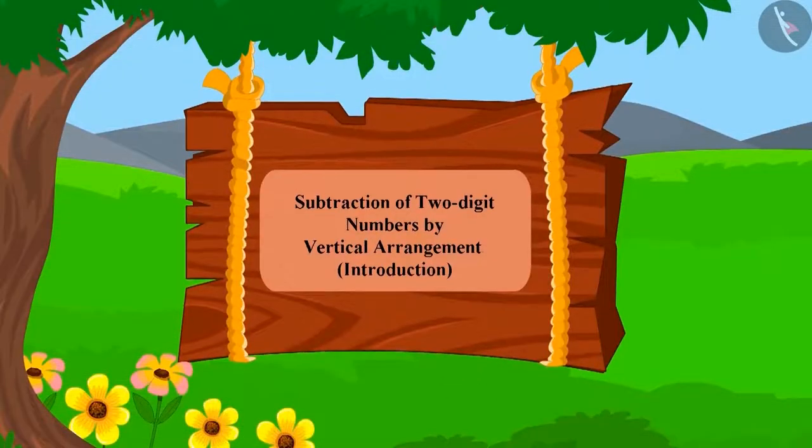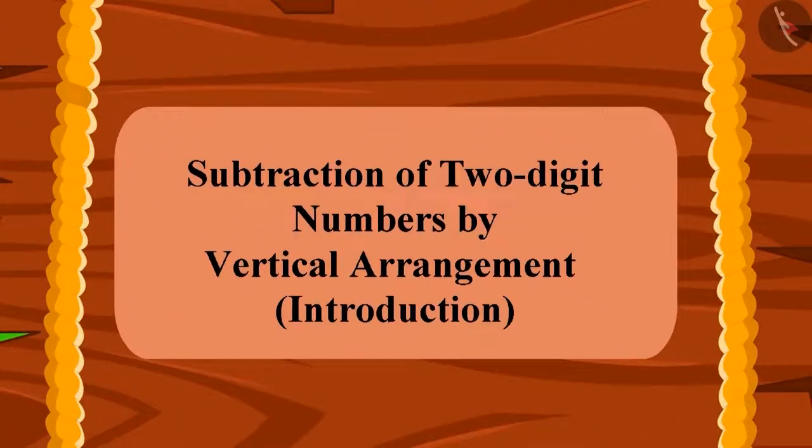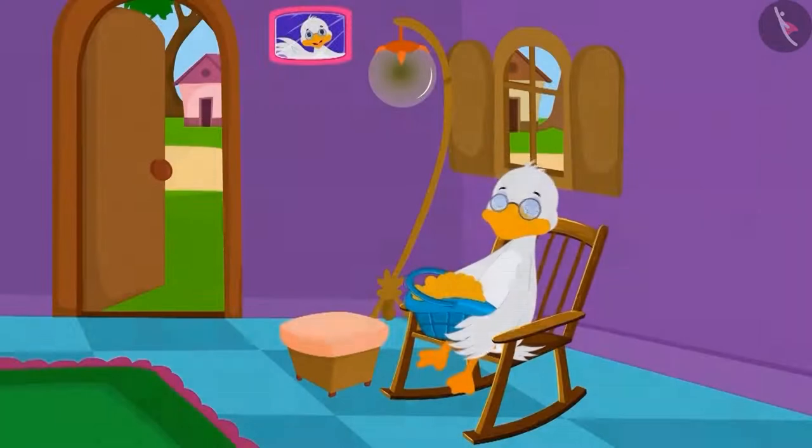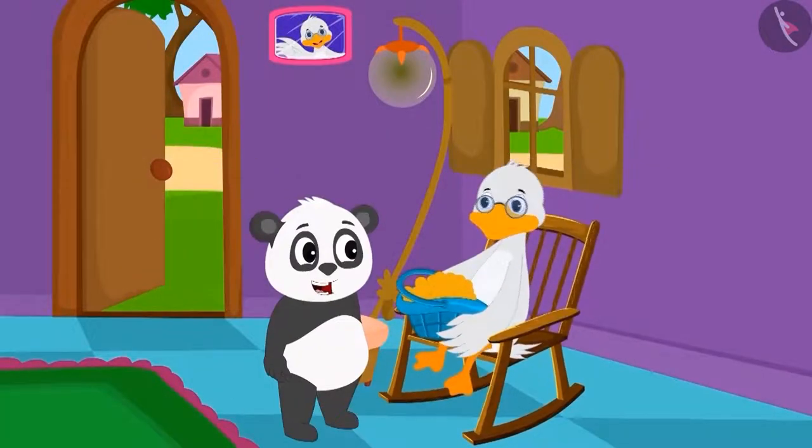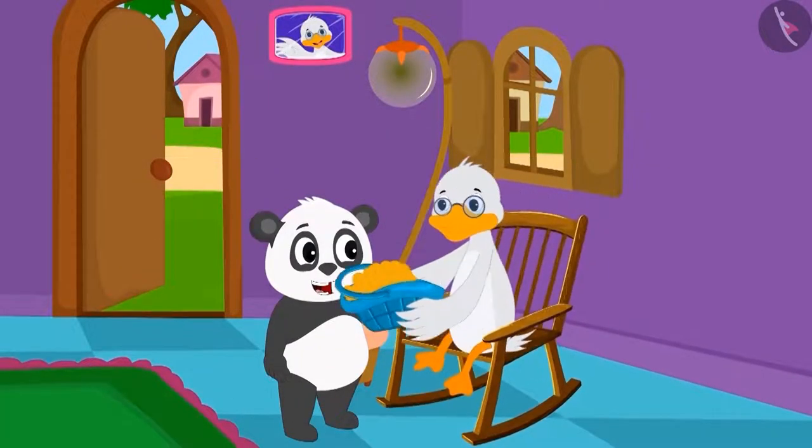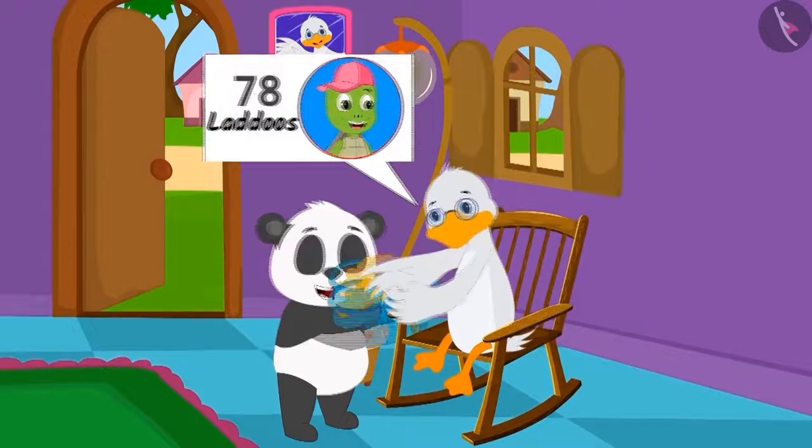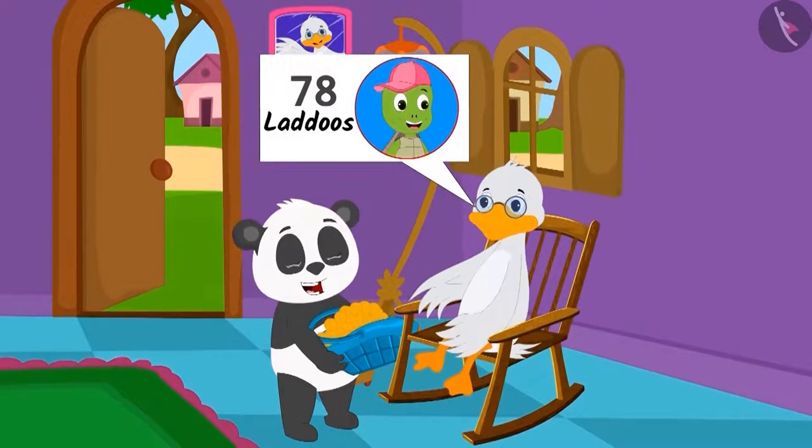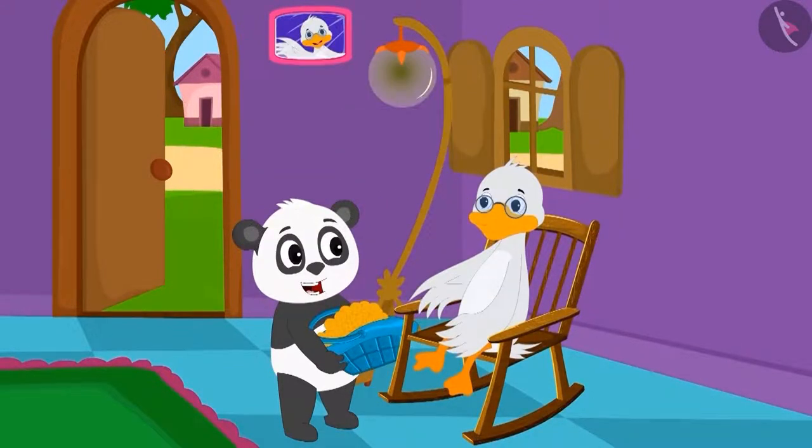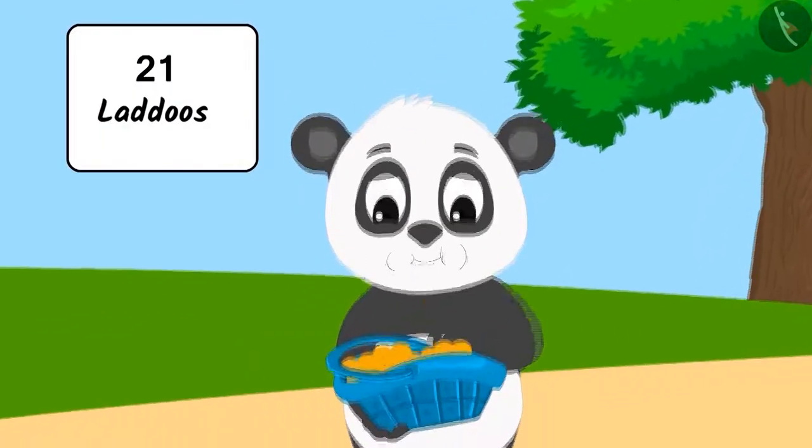Children, in this lesson we will learn the process of subtraction of two-digit numbers by arranging them vertically. One day, Duck Uncle asked Golu to deliver 78 laddos in a basket to Tufan Turtle in another village. Golu ate 21 laddos.